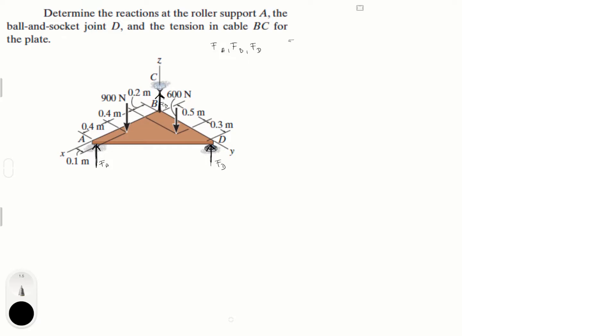So let's start with sum of the forces in the z is equal to zero. We know that F of A plus F of B plus F of D minus the 900 newton force minus the 600 newton force is equal to zero. So that means that F of A plus F of B plus F of D is equal to 1500, and we have one equation. Let's call this equation one.